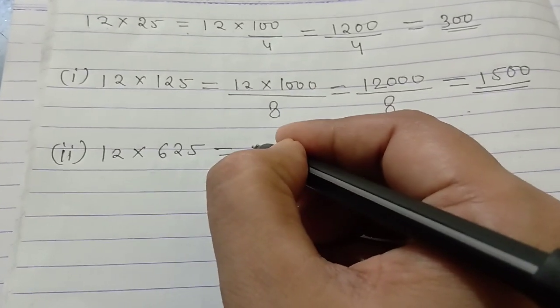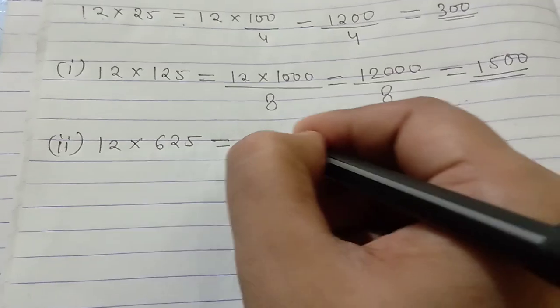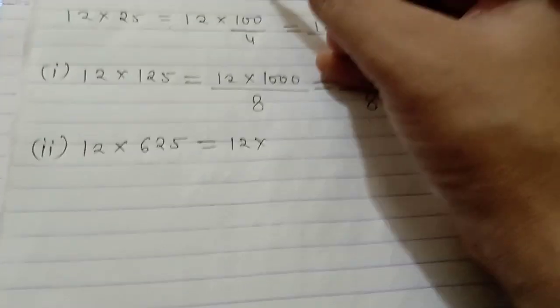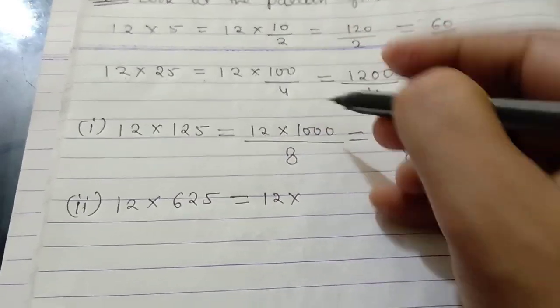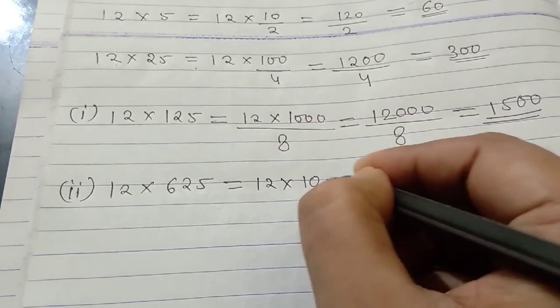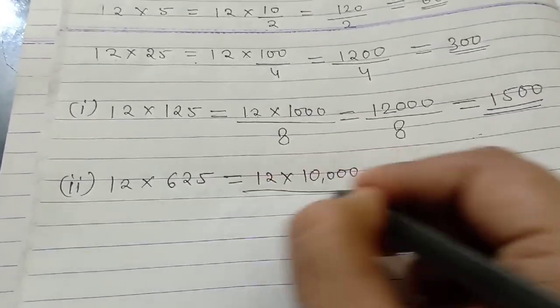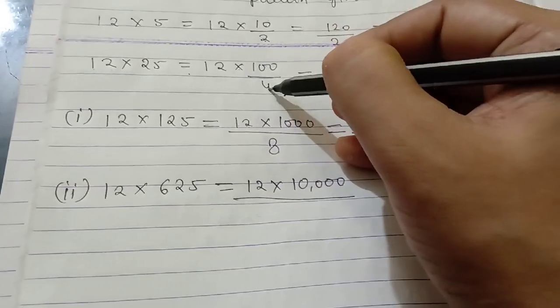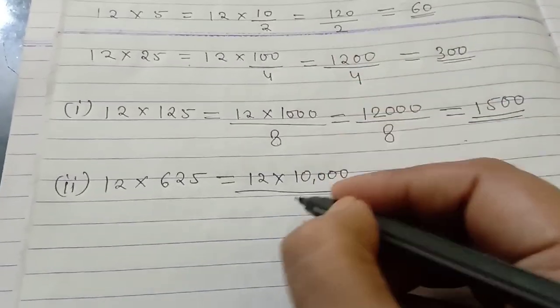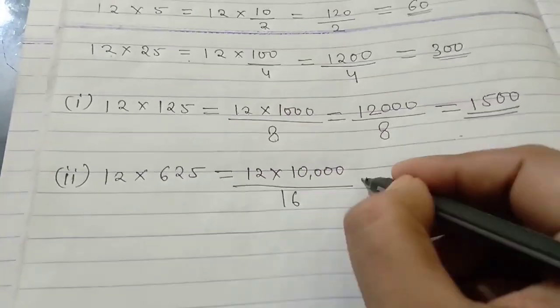Now, we have 12 multiplied by which number? Look here, 10, 100, 1000. This means we have 10,000. Now, see the denominator. It is 2, then 4, 8, then it is 16.